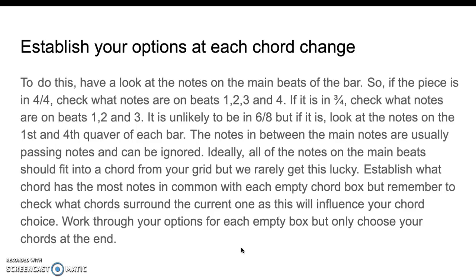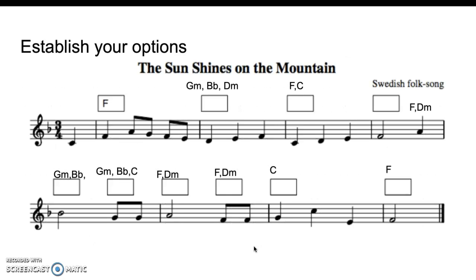Ideally all of the notes on the main beats should fit into a chord from your grid, but we rarely get that lucky. There will probably be a bar somewhere where all the notes fit one chord and it's obvious what to use. Establish which chord has the most notes in common with each empty box, but remember to check what chords surround the current one as this will influence your choice. Work through options for each box but only choose your chords at the end.